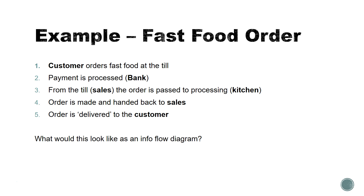When ordering fast food, you as a customer go and order it at the till, or drive-through, whatever it might be. As a customer you're an external data source. The fast food store is not going to give you your food until you pay for it — they're not even probably going to process it until you pay. So payment is likely to be done by an external source, likely a bank. The bank will process it and send back a confirmation saying it's been approved or not. If it doesn't get approved the whole thing stops there, but let's assume that it is approved.